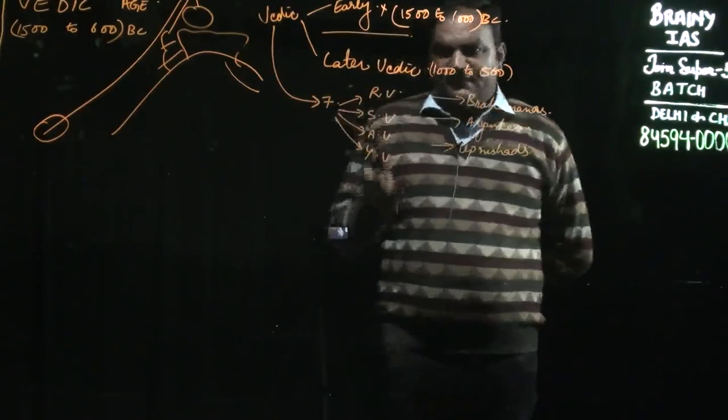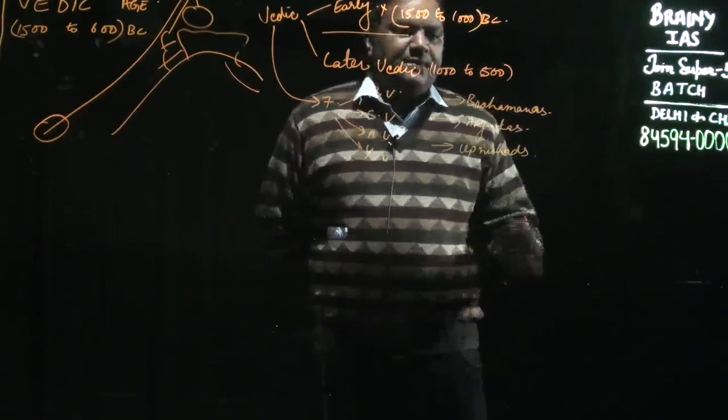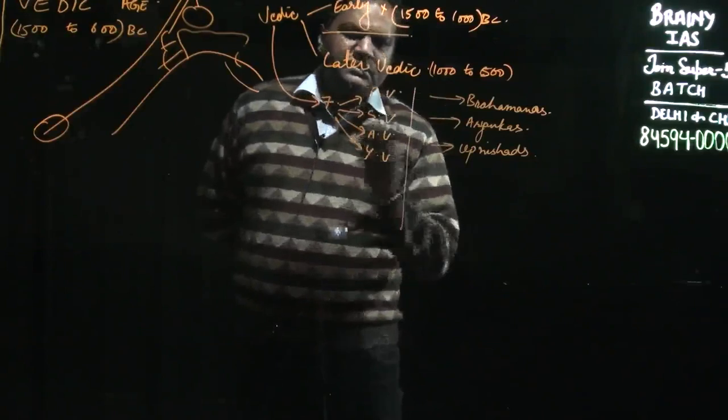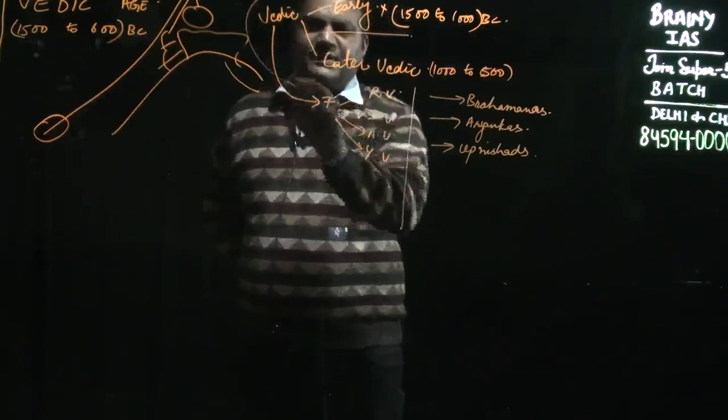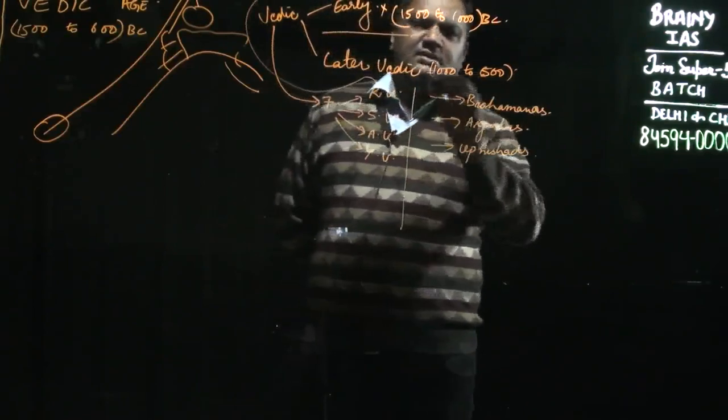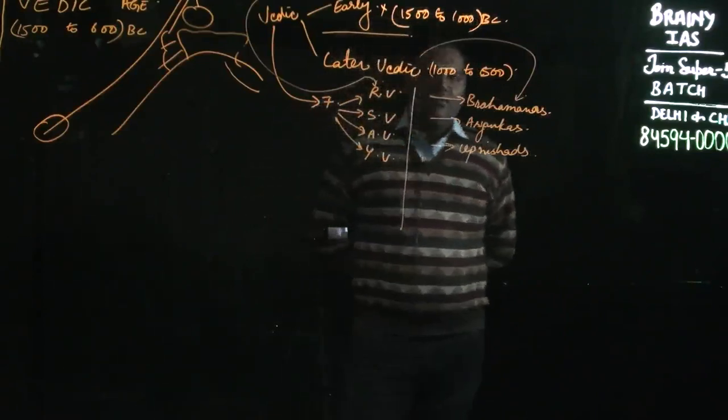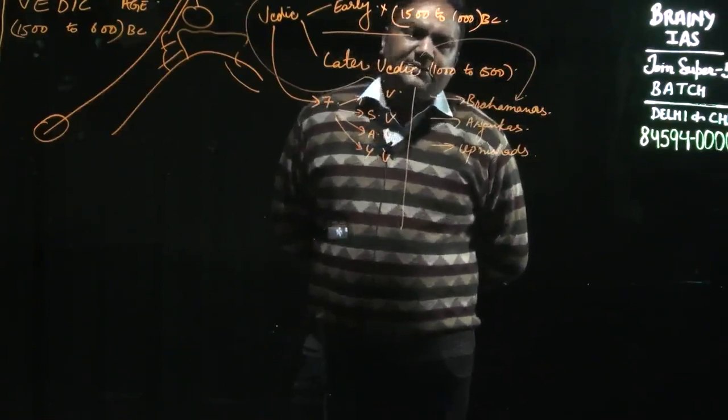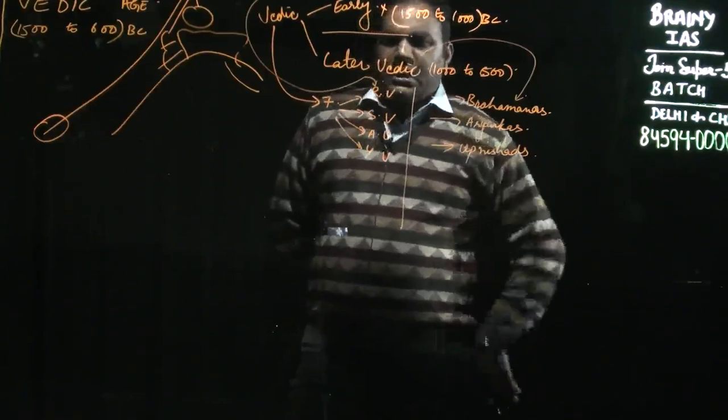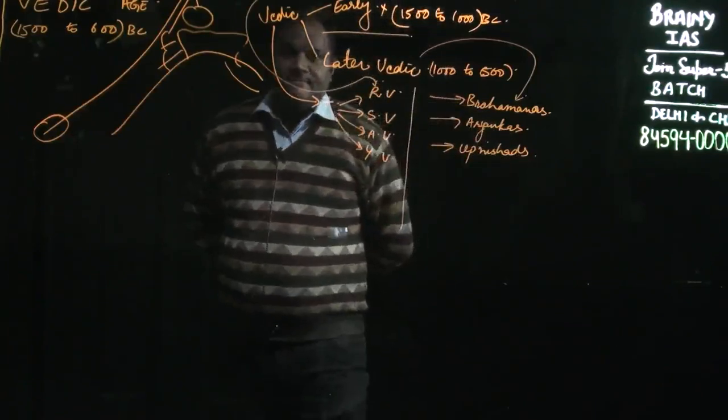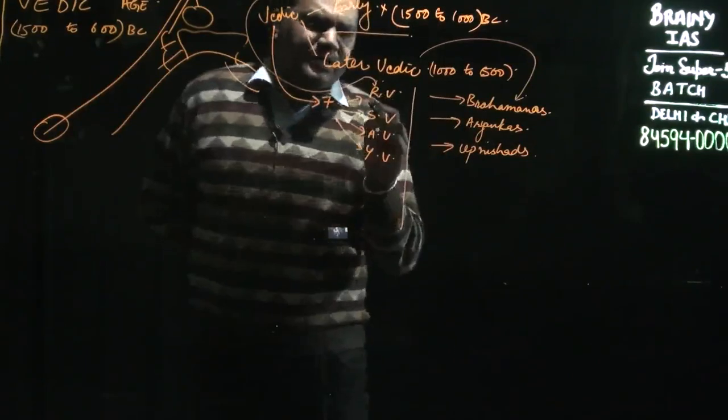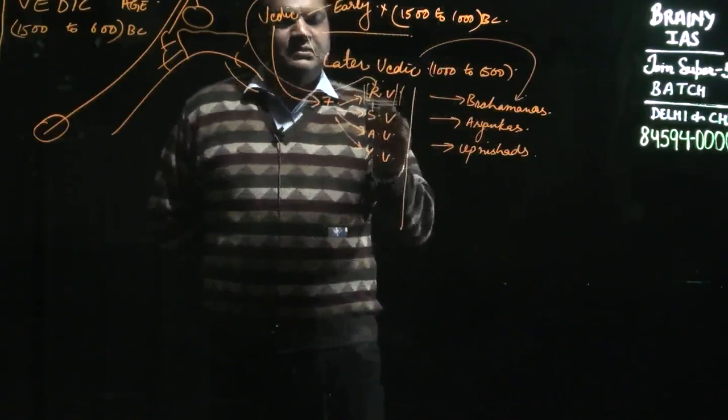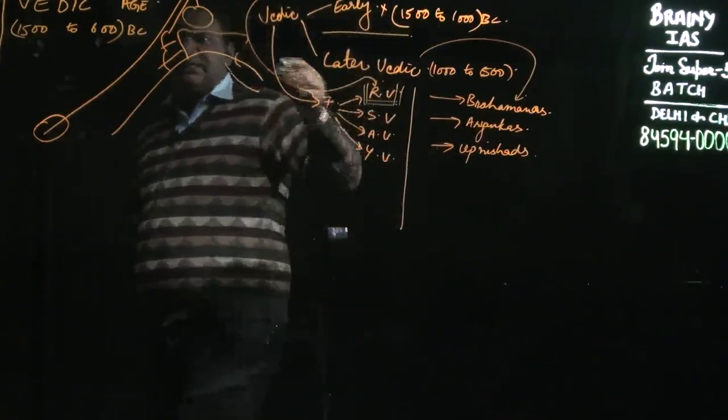We can divide it like this: Early Vedic phase has four books - Rigveda, Samaveda, Atharvaveda, and Yajurveda. Later Vedic stage has three books - Brahmanas, Aranyakas, and Upanishads. So we have total seven books. Rigveda is most important amongst all books because it started from here.